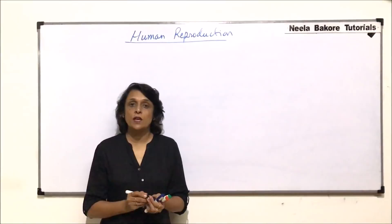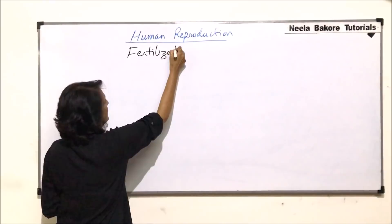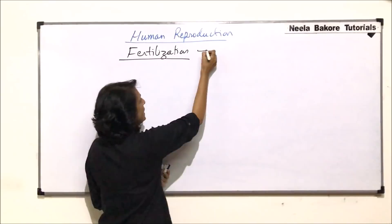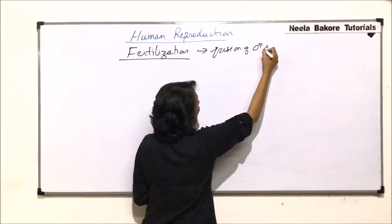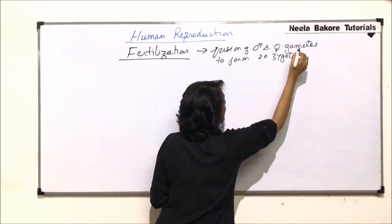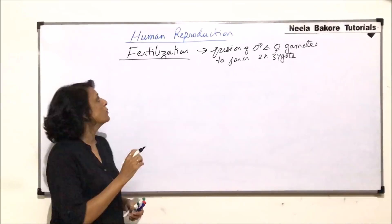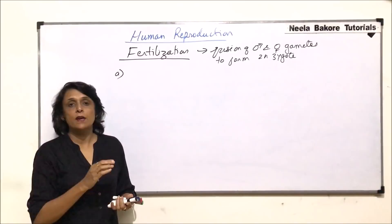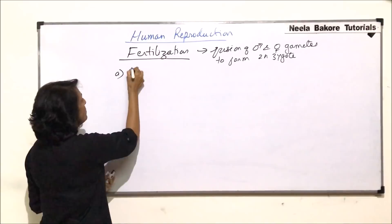In this part, we will talk about the steps which are involved in the process of fertilization. When we define fertilization in one line, it is simply the fusion of male and female gametes to form a diploid zygote. But actually, the process is not that simple. There are multiple steps involved, so we are dividing it into various steps so that each and every part is clear.